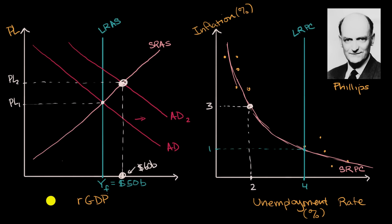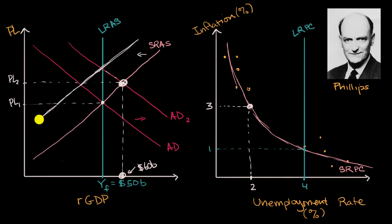What happens next? Workers, when it's time to renegotiate their contracts, will say prices have gone up and they won't work for the same wages over the long run. This causes a leftward shift in the short-run aggregate supply curve — at any given price level, there is less output supplied. Eventually, the equilibrium returns to where everything intersects the long-run aggregate supply curve, back at full employment output, but at an even higher price level — price level 3.